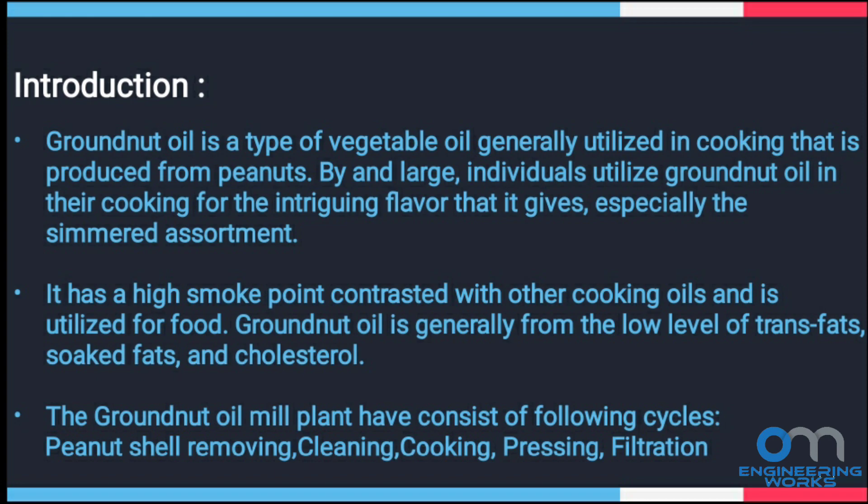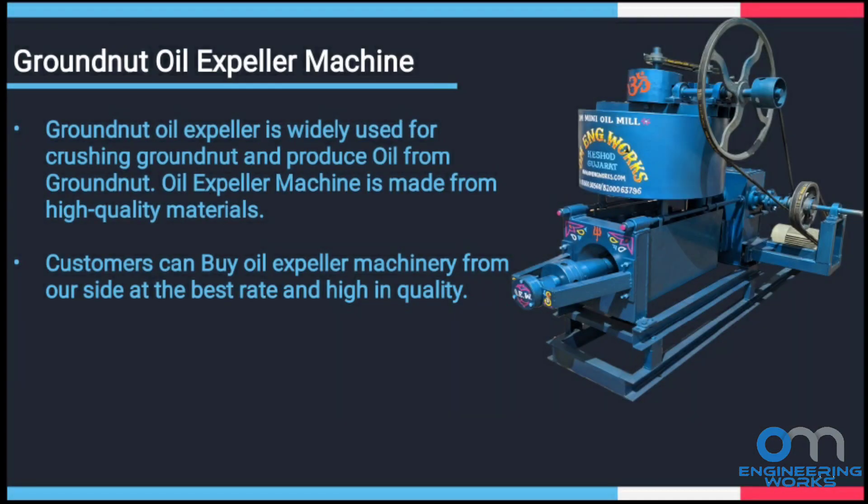Let's see machines used in groundnut oil mill plant. Groundnut oil expeller machine: the groundnut oil expeller is widely used for crushing groundnut and producing oil from groundnut. The oil expeller machine is made from high quality materials and has a longer life.